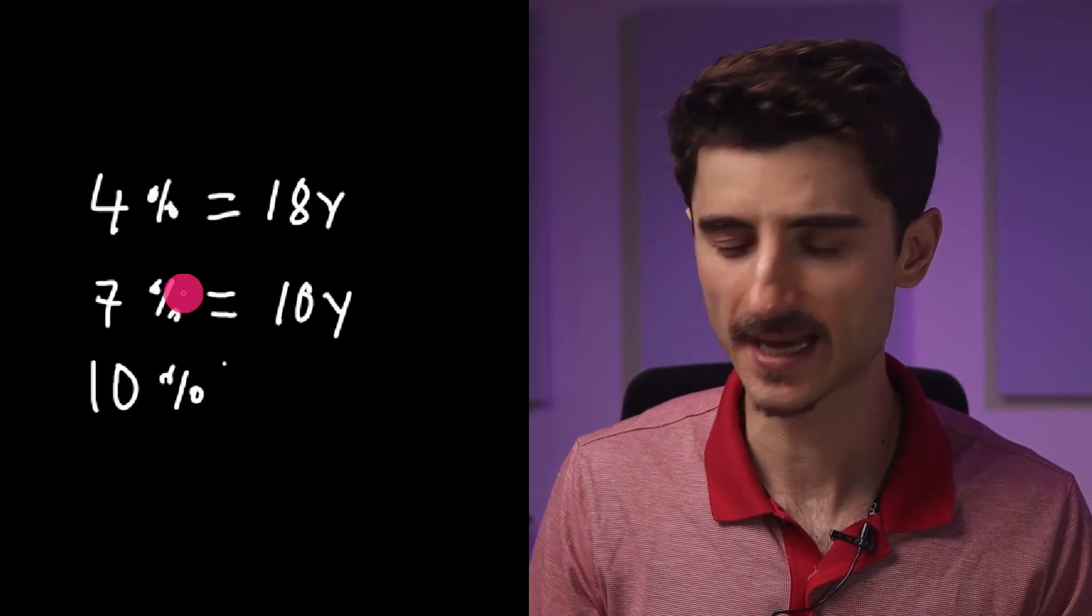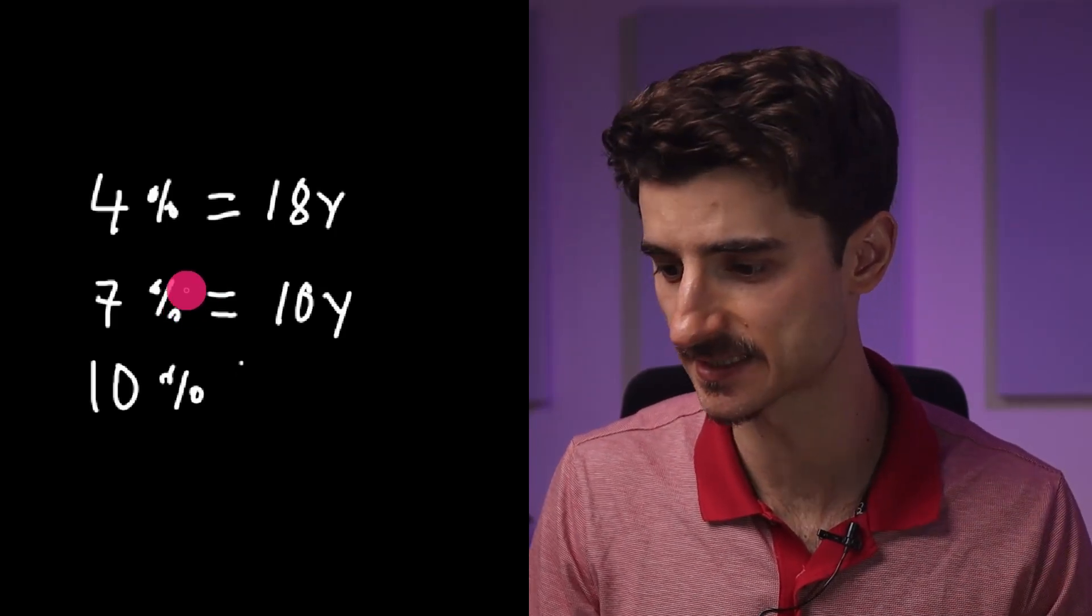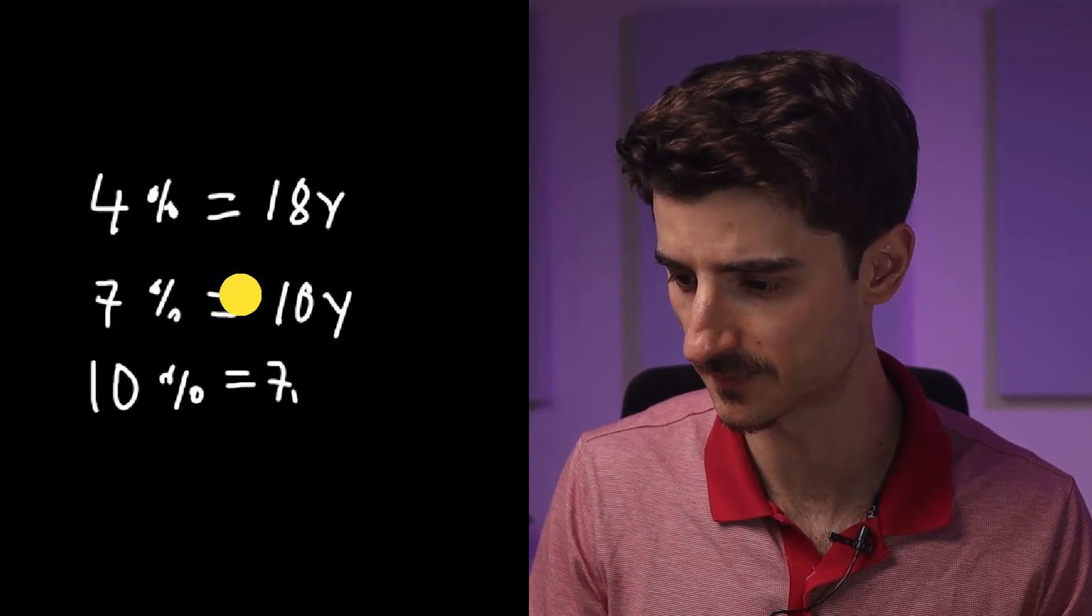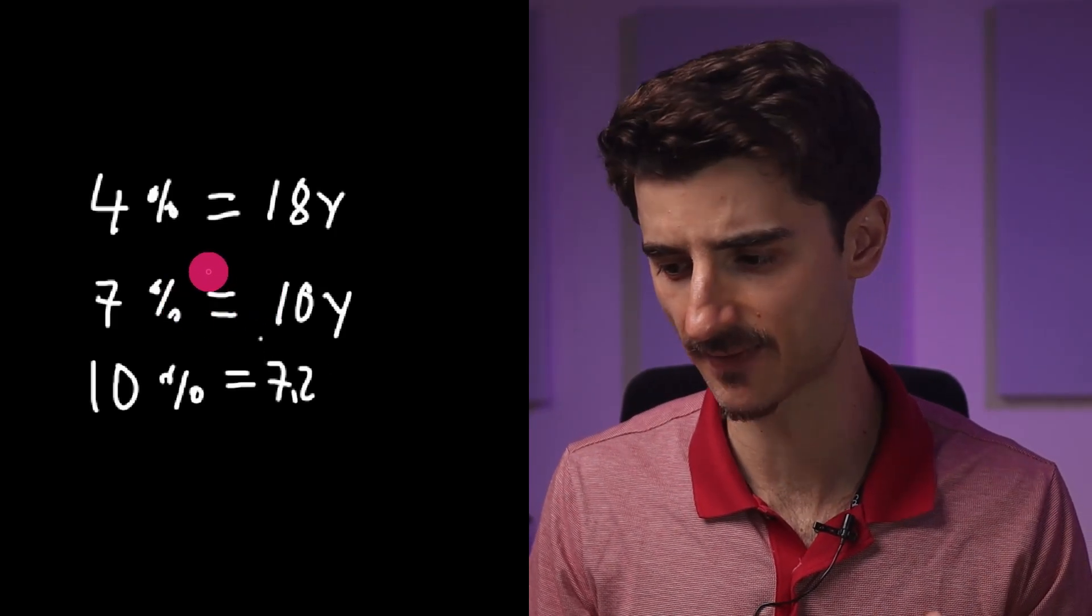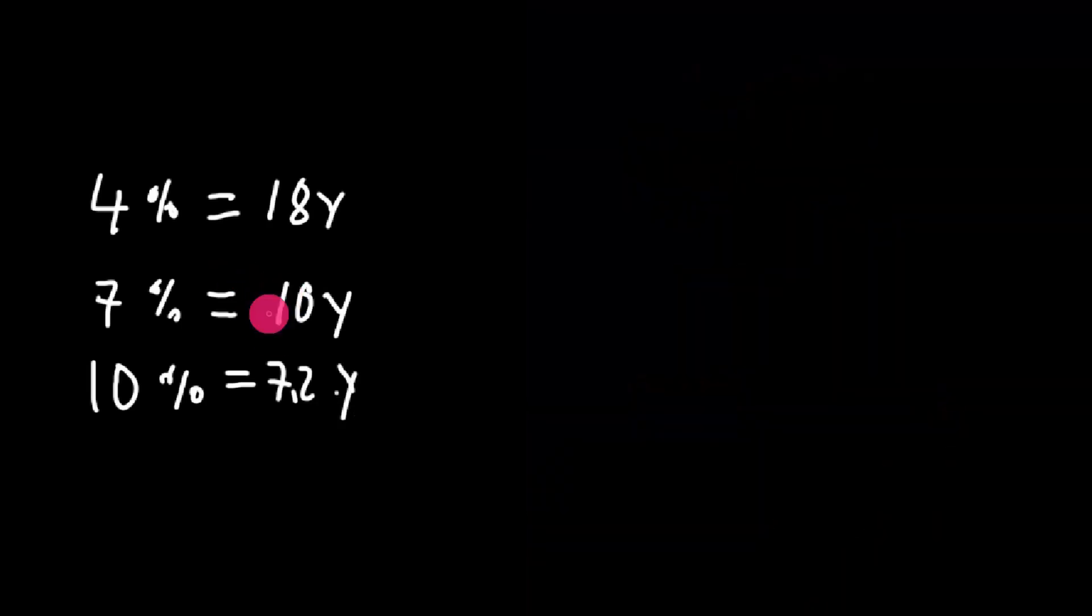For 10%, it takes 7.2 years—that's like seven years and two months maybe. So how did I calculate this quickly? Obviously I did it beforehand, so it doesn't count, but there's something called the Rule of 72...